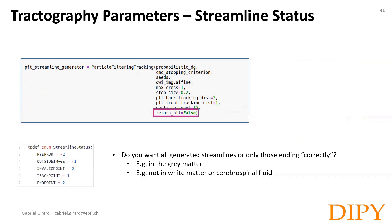Another parameter is return_all. By default it is set to true and thus will return all generated streamlines, including those ending in the white matter or CSF. Depending on your case study, you may or may not be interested in those streamlines.